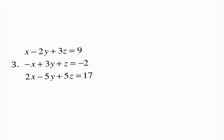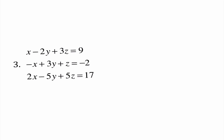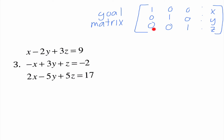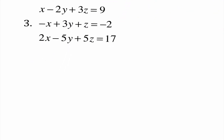Our last two examples are 3 by 3 systems. The goal matrix for a 3 by 3 is the identity: 1,0,0 / 0,1,0 / 0,0,1 — because it says x equals x, y equals y, z equals z with the other variables canceled out. Setting up the augmented matrix: column 1 is 1, negative 1, 2; column 2 is negative 2, 3, negative 5; column 3 is 3, 1, 5; constants are 9, negative 2, 17.